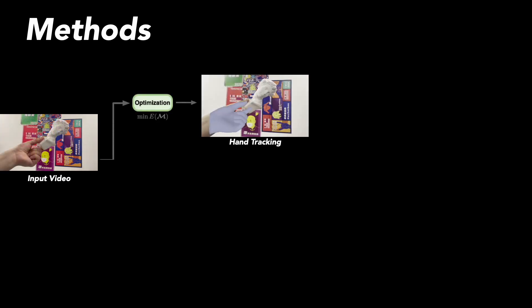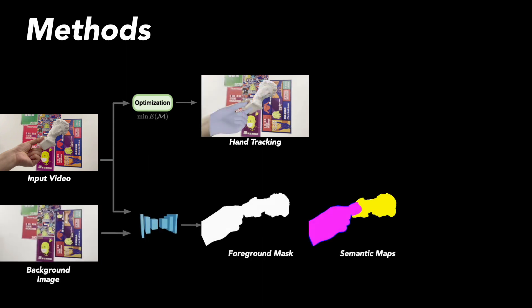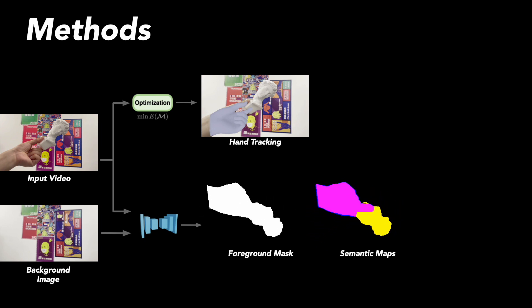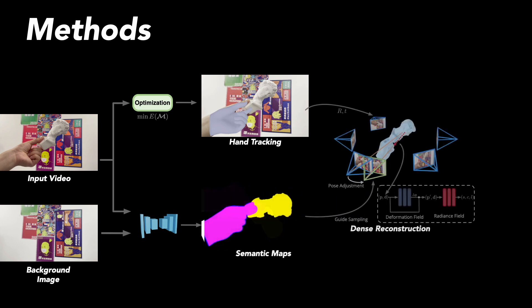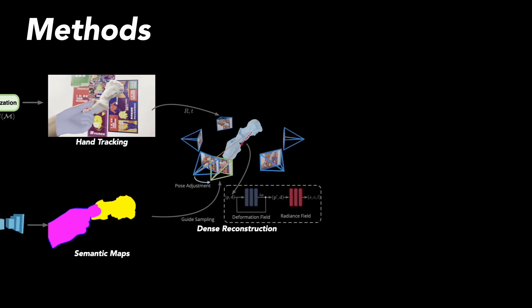Our method starts with a dynamic video captured by a still camera. Note the relative motion between the hand and object is assumed to be small. We first do hand tracking by solving an optimization problem. The relative motion of the object and camera can be extracted from hand rotation and translation. Then we get hand object segmentation maps by doing background matting first and then doing semantic segmentation.